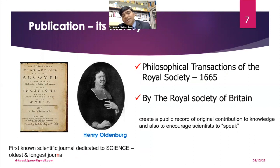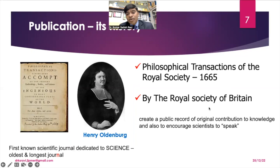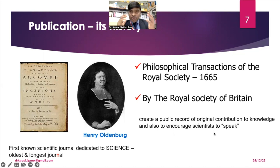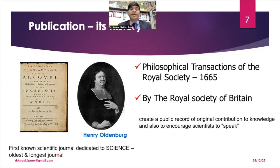When we look at the history of publication, it dates back to 1665. The first known scientific journal dedicated to science was established by the Royal Society of Britain, led by Henry Oldenburg, who was the chief editor. This was the oldest and longest-running journal published to date. Its aim was to create a public record of original contributions to knowledge and to encourage scientists to speak directly to the public. Now we have countless journals in various fields, even in anatomy alone.